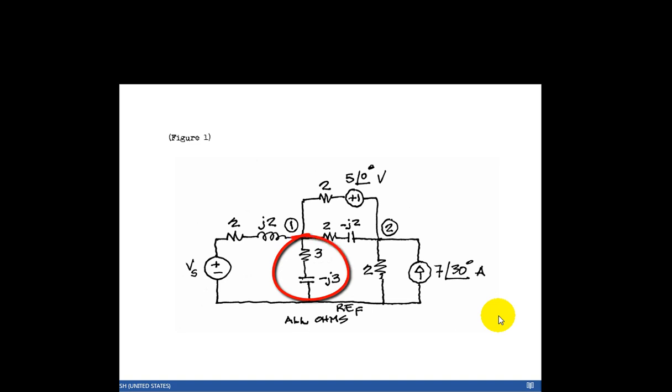So this is the branch that needs to be removed, and we will be doing that, the 3-J3 Ohm branch. And we need to solve for the voltage V1.